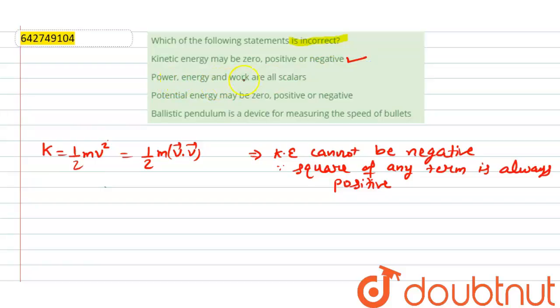Power, energy and work are all scalar. This is the right answer because power is also a scalar, energy and work all are scalars.